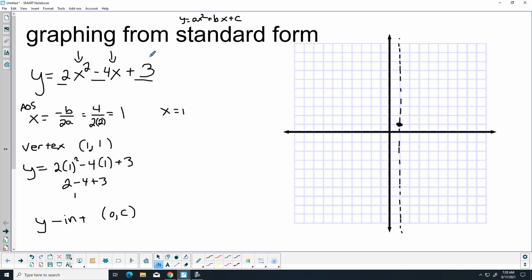My y-intercept is c. Well in this case, c is 3, so my y-intercept is (0, 3). I'm going to go ahead and put a dot at (0, 3), and then I'm going to put one directly on the other side because that's the mirror image.